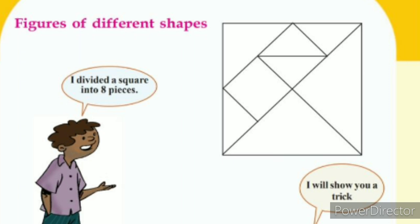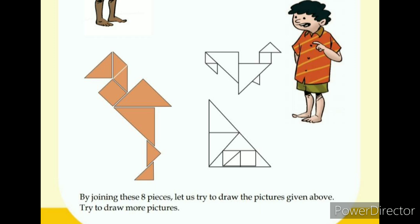Look at the textbook page number 57. Figures of different shapes. Do you see our eight-piece tangram? I divided a square into eight pieces. I will show you a trick. Look at the pictures he made. By joining these eight pieces, let us try to draw the pictures given above.